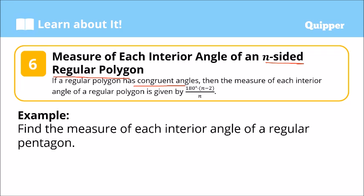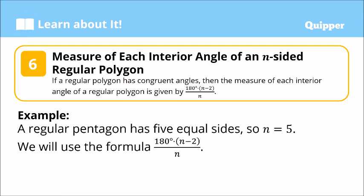It's easy to memorize because the numerator is just the formula from earlier for finding the sum of all interior angles. We simply divide by the number of sides of the polygon. Example: Find the measure of each interior angle of a regular pentagon. We use the formula: 180 degrees times (n minus 2) divided by n.